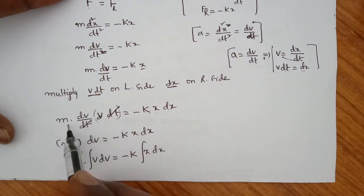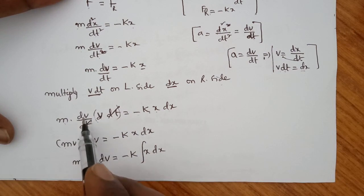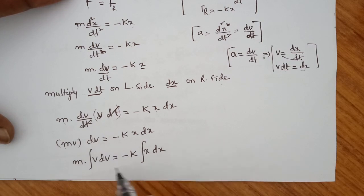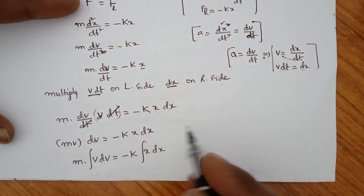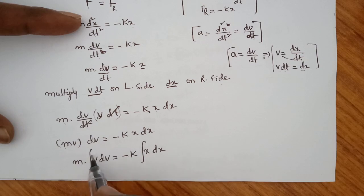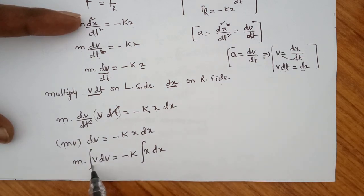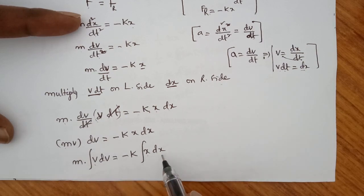So m into v dv equals minus k into x dx. Integrating on both sides: m times the integration of v dv equals minus k times the integration of x dx. We can integrate v with respect to dv and x with respect to dx.